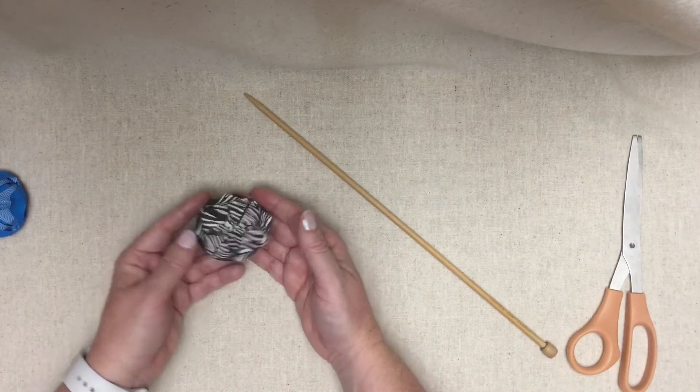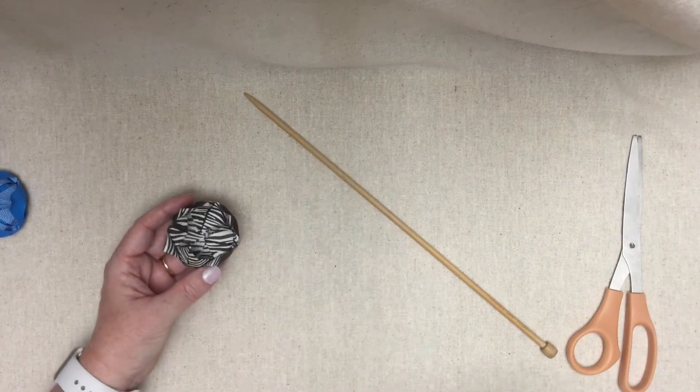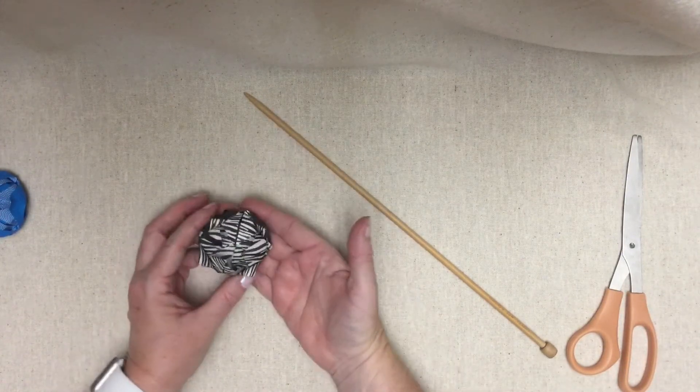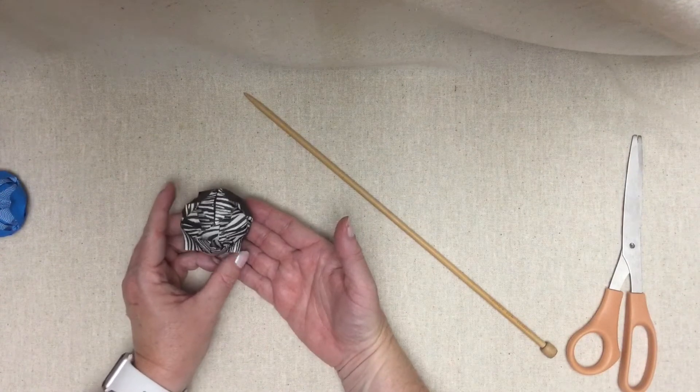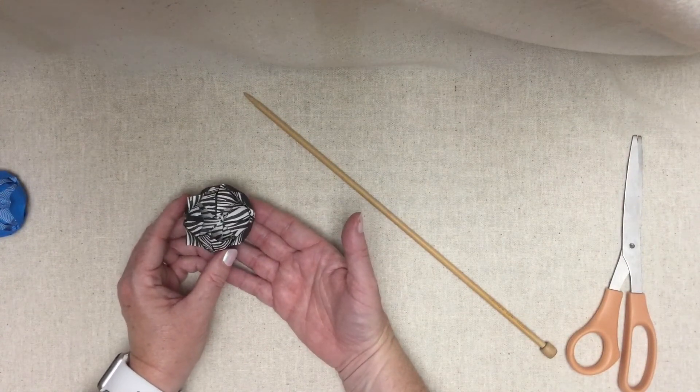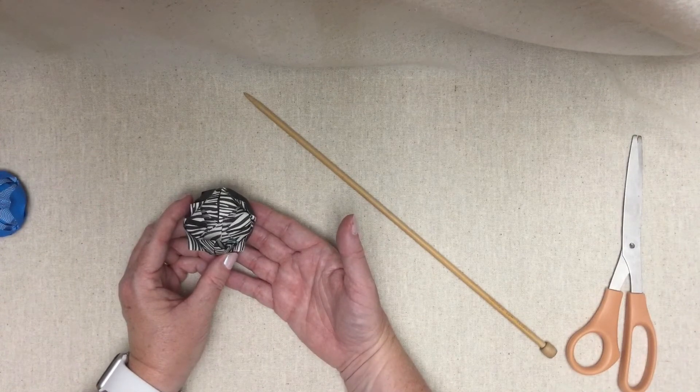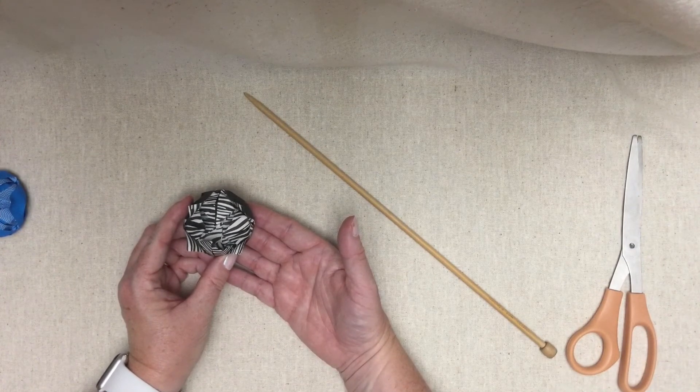And there you have it. An origami flower with one slightly ragged petal. I hope you enjoyed this craft. And if you make one of your own, we'd love if you shared a photo of it in our comments on the video. See you next time.